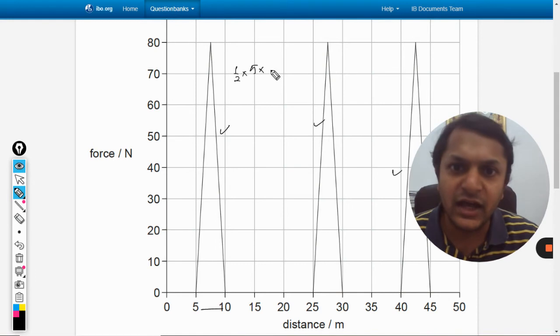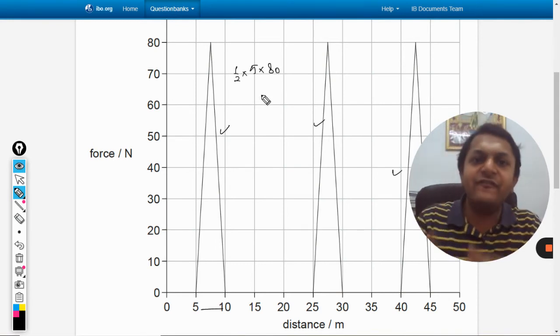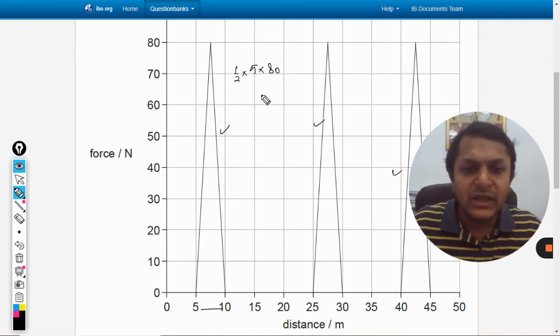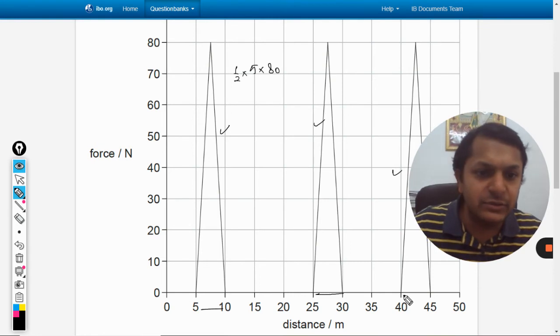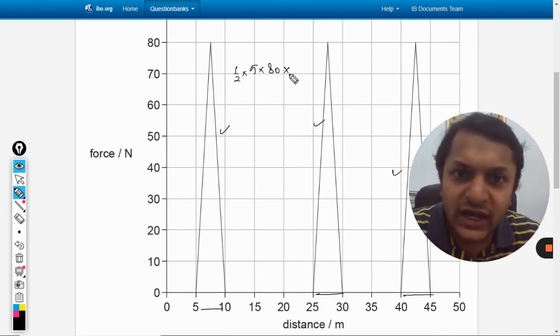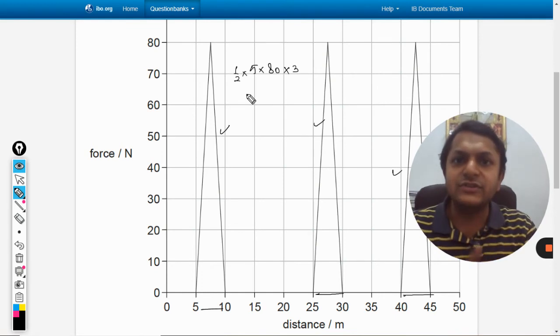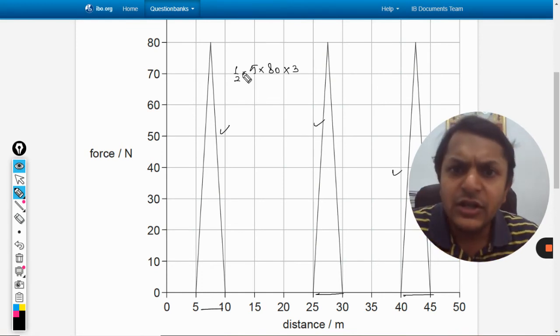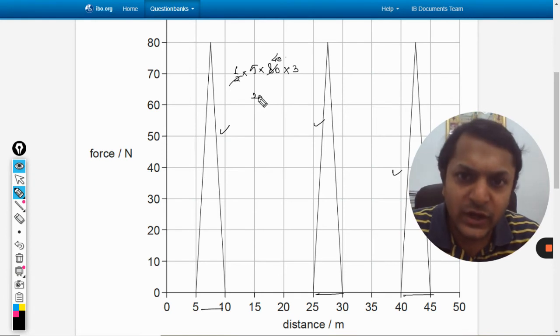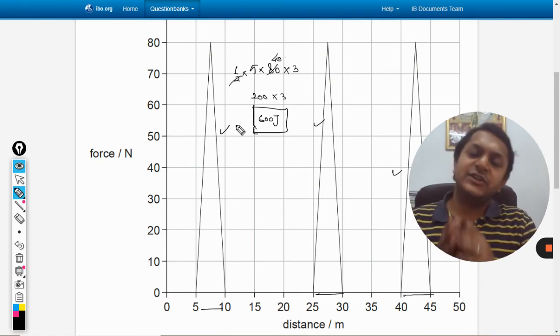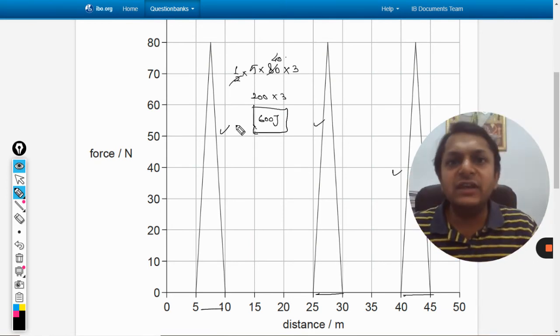Into height, height is 80. Every time it's the same: here also the base is 5, here also the base is 5, and the height is 80. So the total area will be three times the area of one single triangle. This is going to be 1/2 × 5 × 80 = 200, multiply by 3, so it's 600.